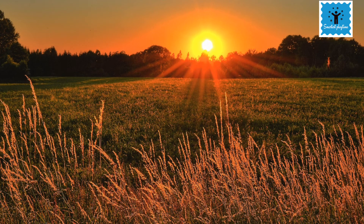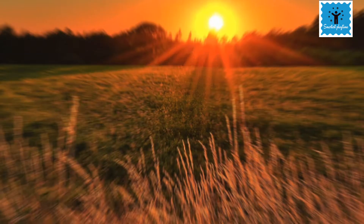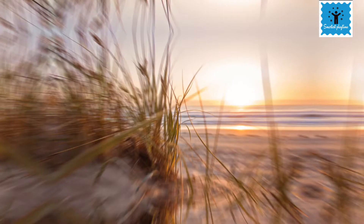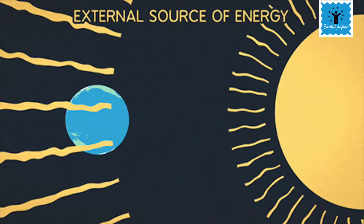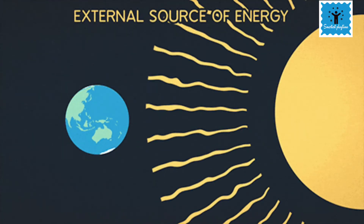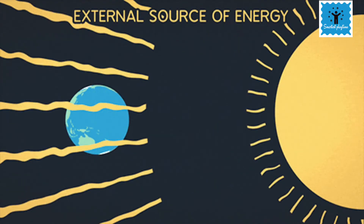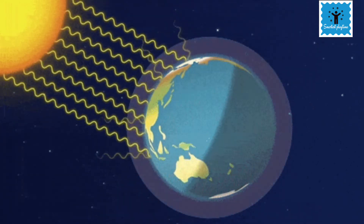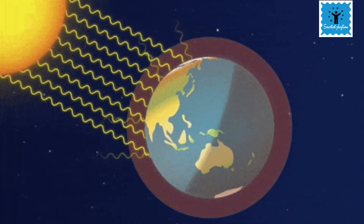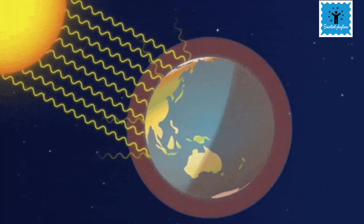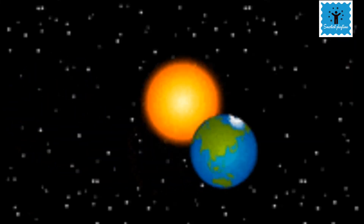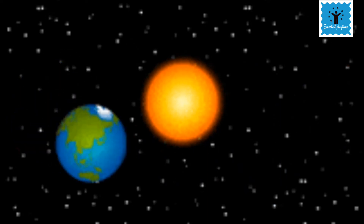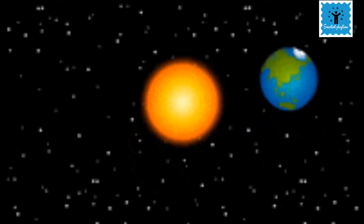Have you ever wondered how the sun is able to warm us even though it is so far away? The energy is transferred from the sun to everything on the earth. The sun doesn't need to be touching the earth for the energy to be transferred, and there is space in between the earth and the sun, yet the energy from the sun is able to warm us.